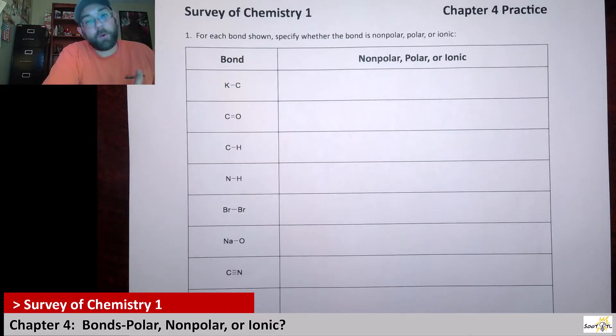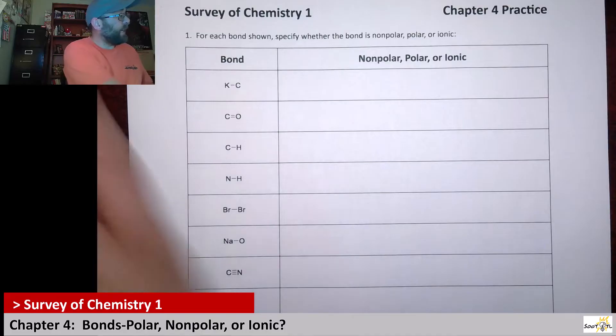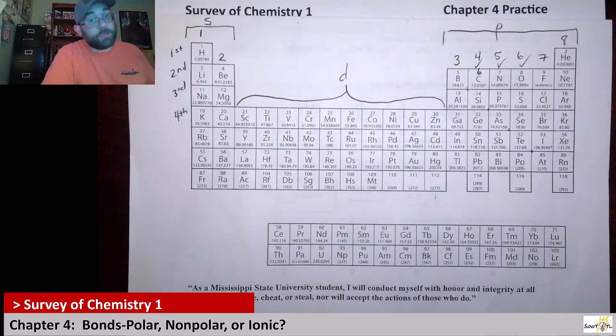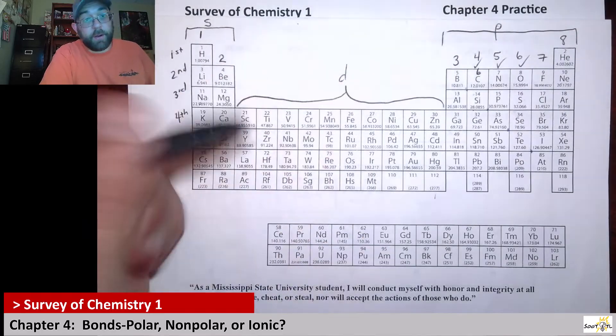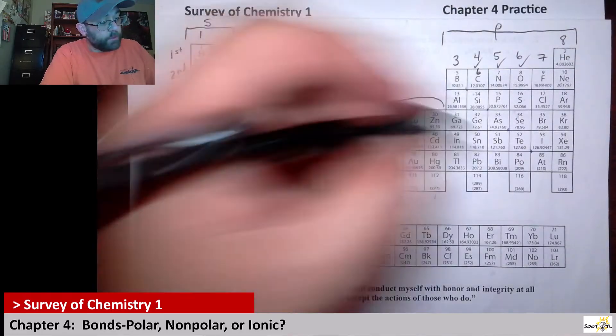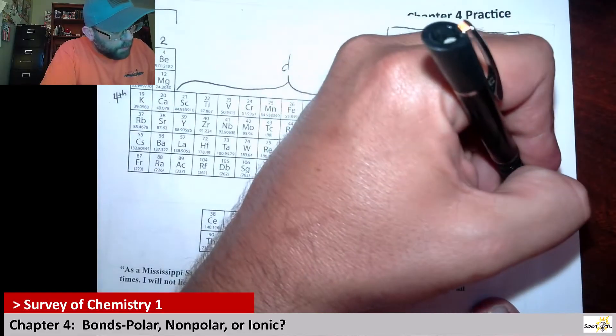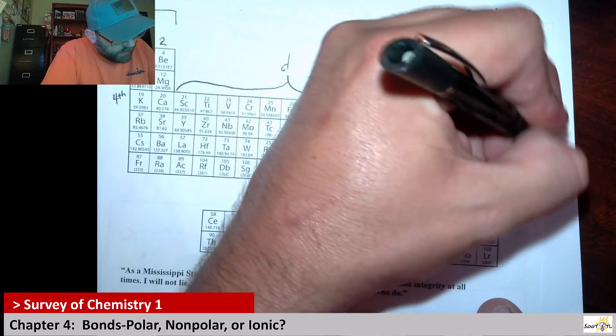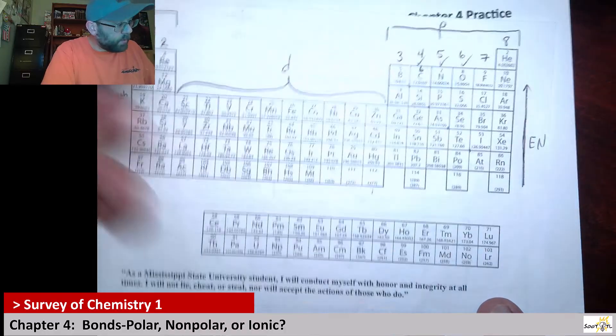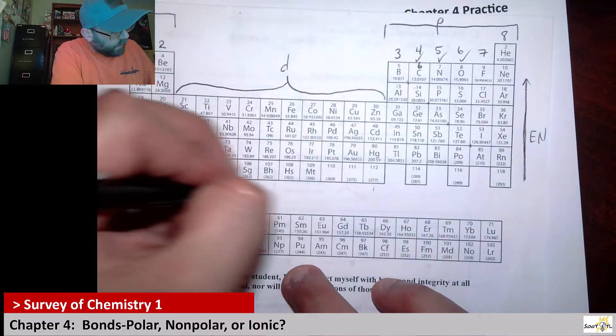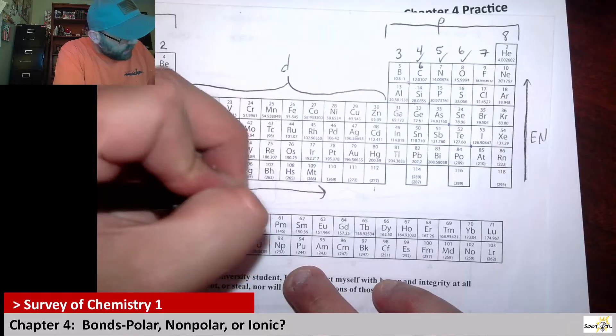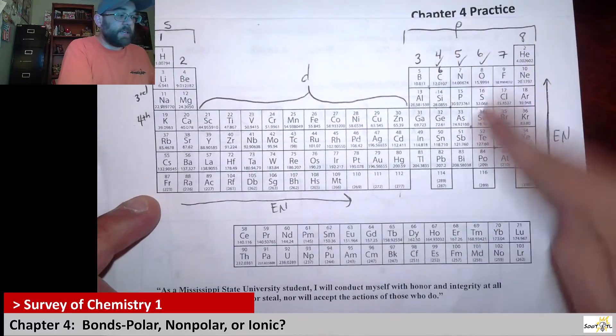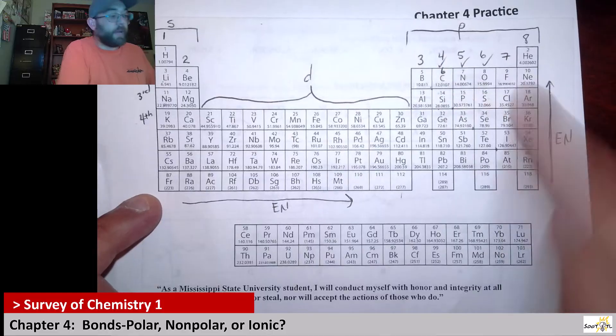The way we're going to gauge that is we're going to need to use the electronegativity. The best way to gauge the electronegativity is using our handy dandy periodic table here. Just remember electronegativity increases from bottom to top, but it also increases from left to right.